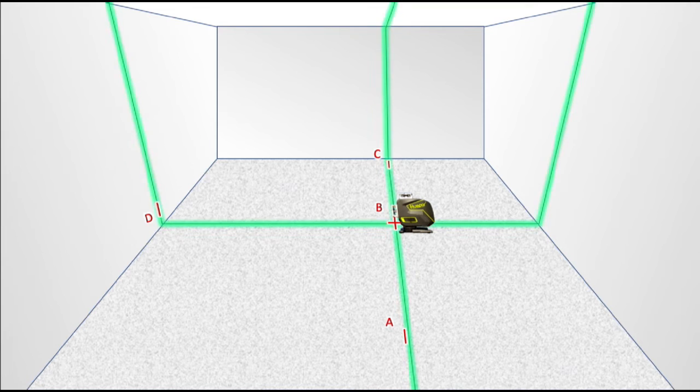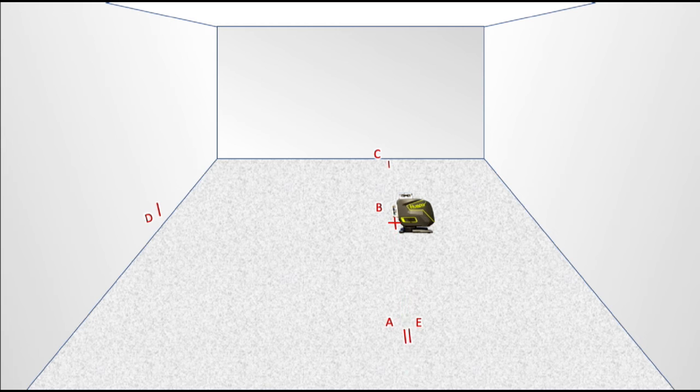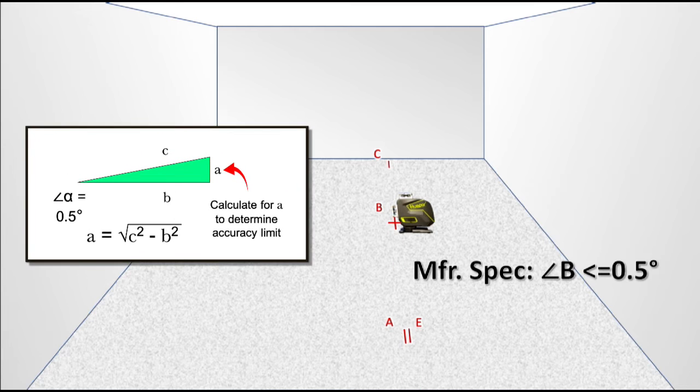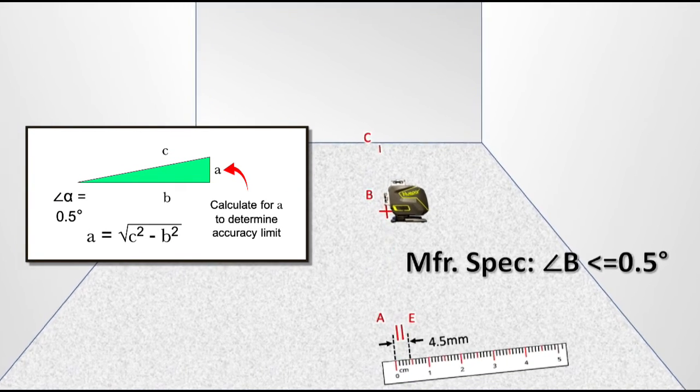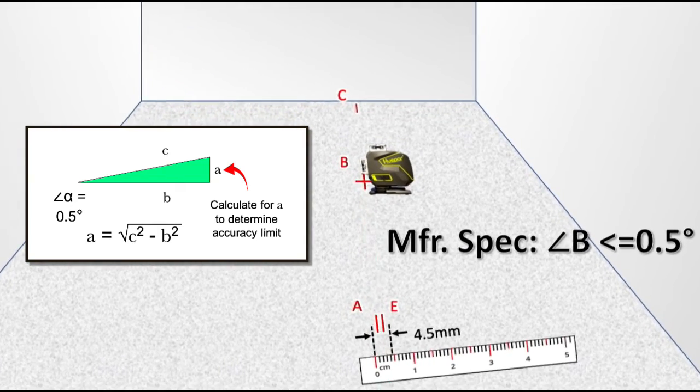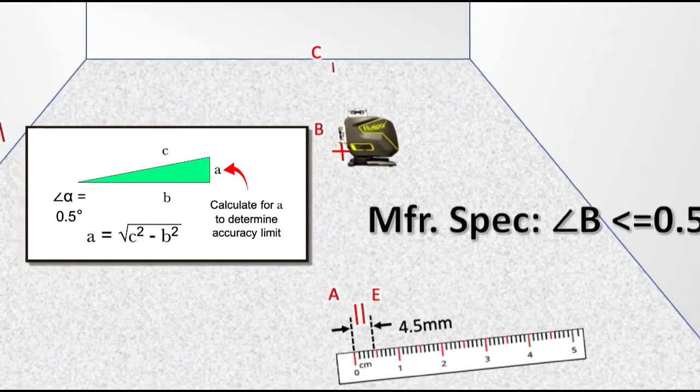Now, make a mark next to mark A and label this mark E. Note the distance between marks A and E. Also note that marks A and E join at B, creating an angle which cannot be more than one half degree. Since we are checking orthogonal accuracy at 5 meters, we can calculate for right triangle and determine that the maximum deviation is just less than 4.5 millimeters. In this simulation, we can see that the measure deviation is about 2 millimeters, so we are within manufacturer specification.